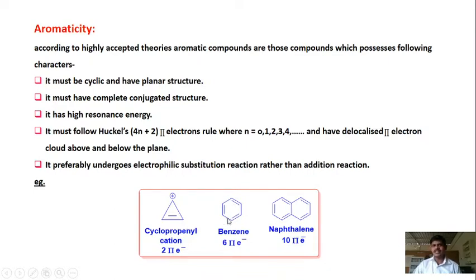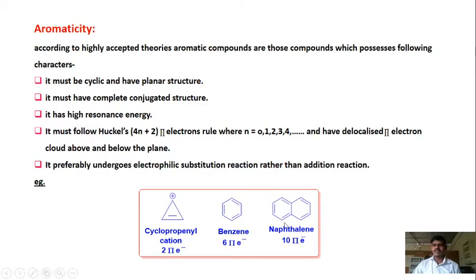Naphthalene has five double bonds, so five times two gives ten pi electrons. Following Hückel's rule with n=2: 4×2 + 2 = 10. So it follows Hückel's rule. It will have more resonating structures, giving higher resonance energy. It is planar and cyclic, and the double bonds are in conjugation to one another. These are examples of aromatic compounds, and this is how aromaticity works.